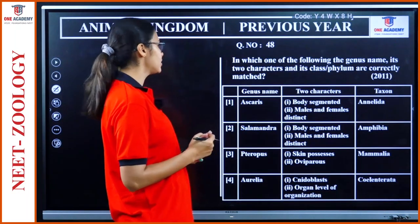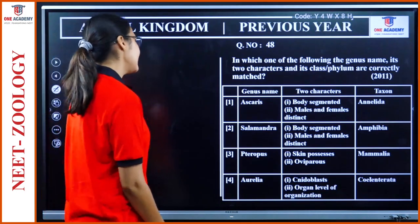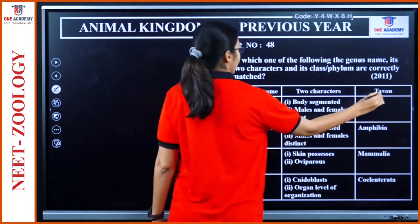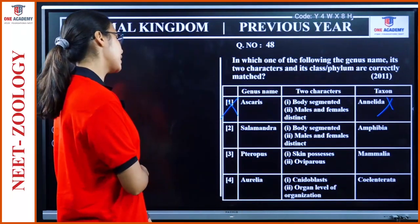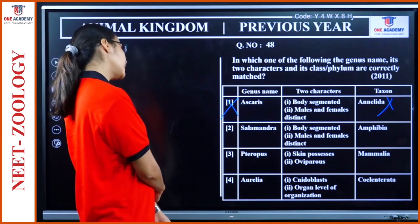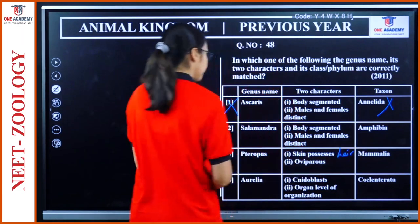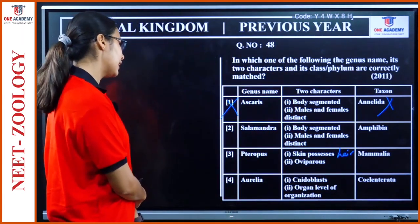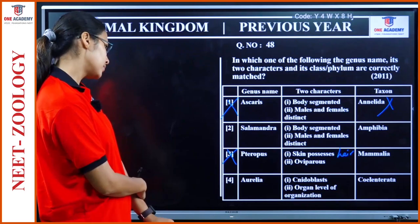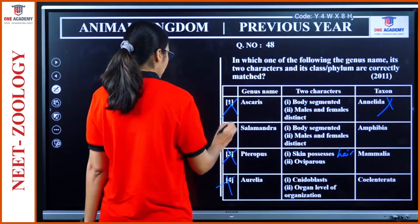Question 48: 'In which genus are two characteristics correctly matched?' Ascaris — body segmented — no, they are Aschelminthes, not segmented. Salamandra — body segmented, male and female distinct — wrong for segmentation. Corvus — possess hair, oviparous — Mammalia... Corvus is a bird not mammal; oviparous is wrong for the listed genus. Aurellia — cnidoblast, organ level of organization — no, they have tissue level of organization. Option toward the correct answer is Salamandra — C.